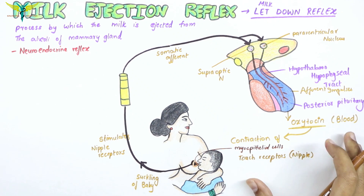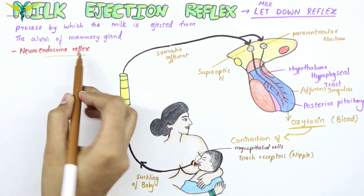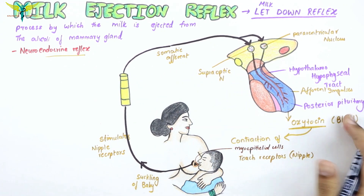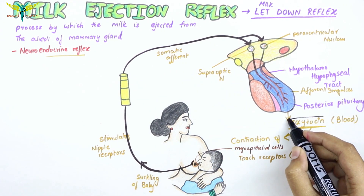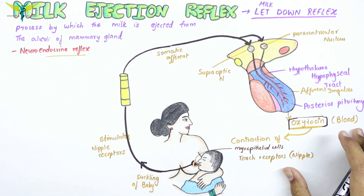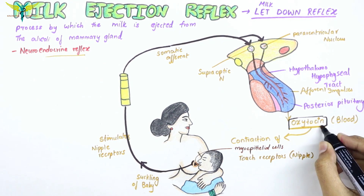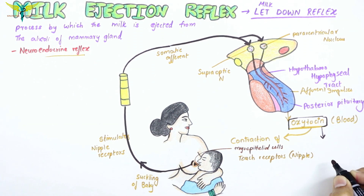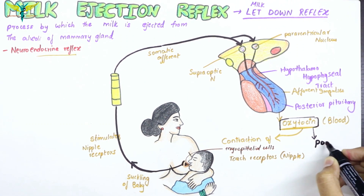This reflex is therefore called a neuroendocrine reflex. During this reflex, a large amount of the hormone oxytocin is released into the blood by the positive feedback mechanism.